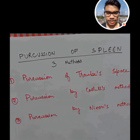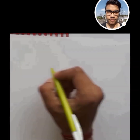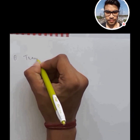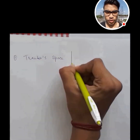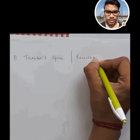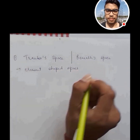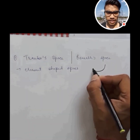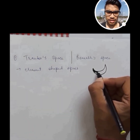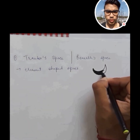First, let's look at the percussion of drop space. Drop space, also known as the Bennett's space, is a crescent shape — meaning it looks like a half moon.